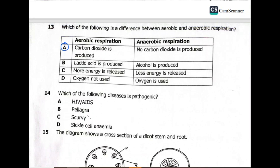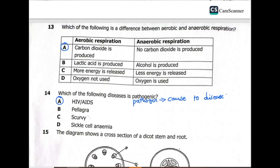For question 14, which of the following diseases is pathogenic? The word pathogenic comes from the word pathogen — any microorganism that has the ability to cause diseases. There are two types of diseases: transmitted and non-transmitted. All pathogenic diseases are transmitted; they can be transmitted from one organism to another. HIV is transmitted, so HIV is the answer.